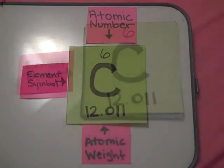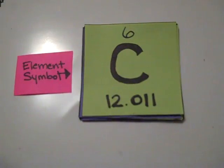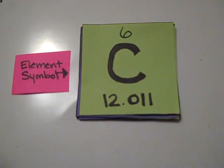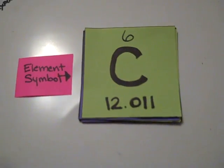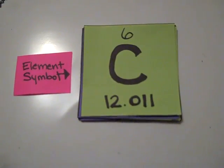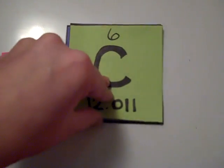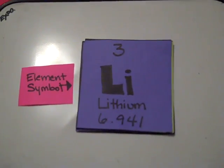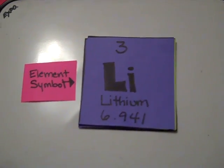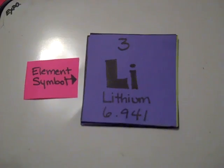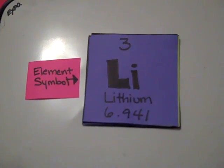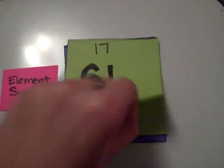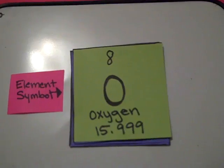First, we'll talk about element symbols. An element symbol is used to abbreviate an element rather than writing out its full name. They are made up of either one capital letter, like a capital C for carbon, or one capital and one lowercase letter, like Li for lithium. These symbols mostly make sense: C for carbon, Li for lithium, Cl for chlorine, O for oxygen.